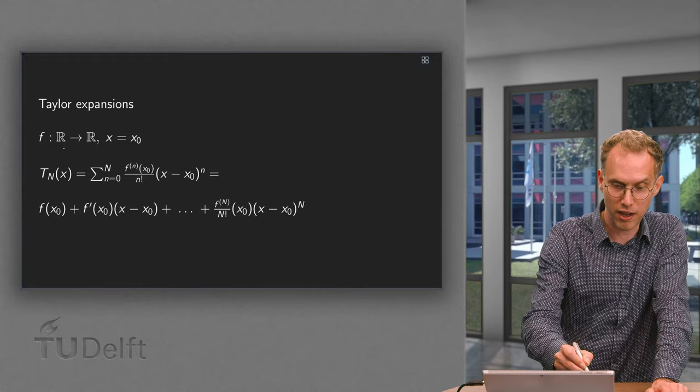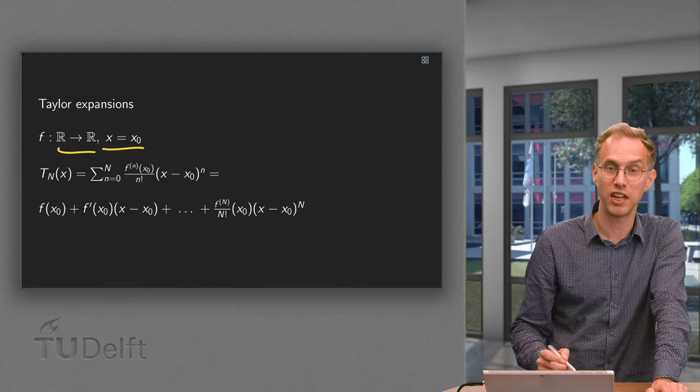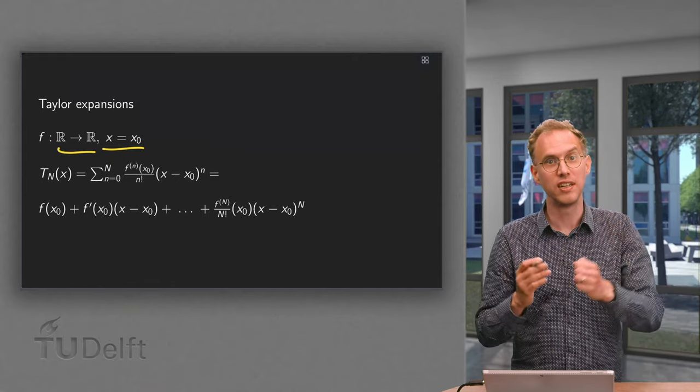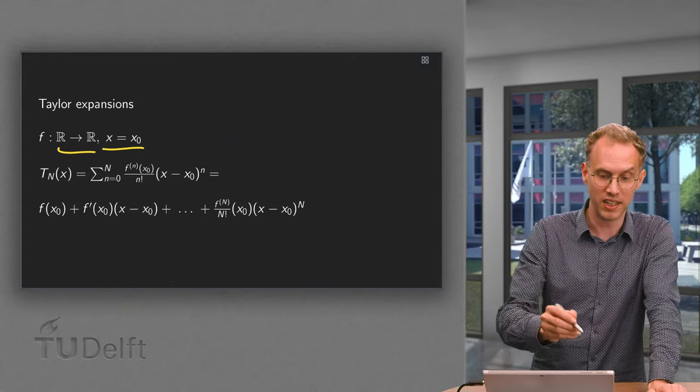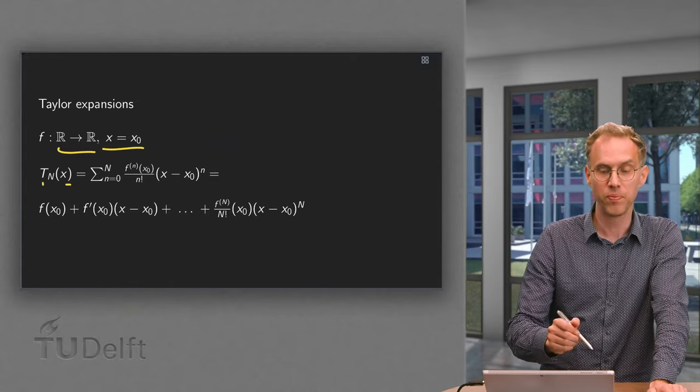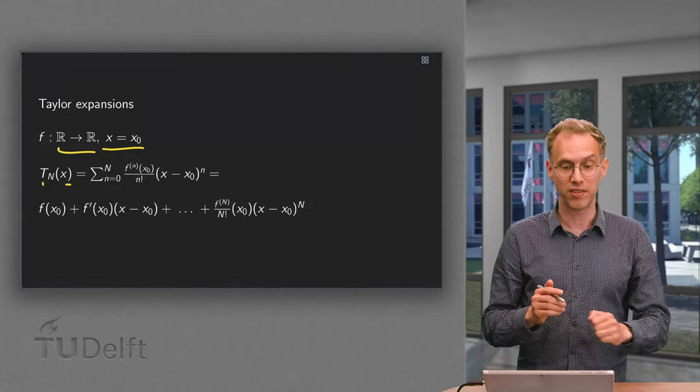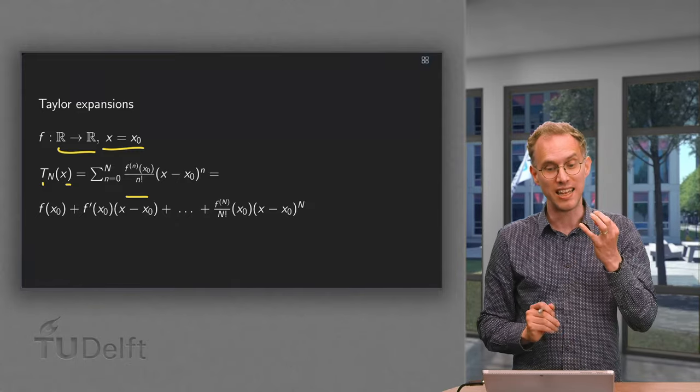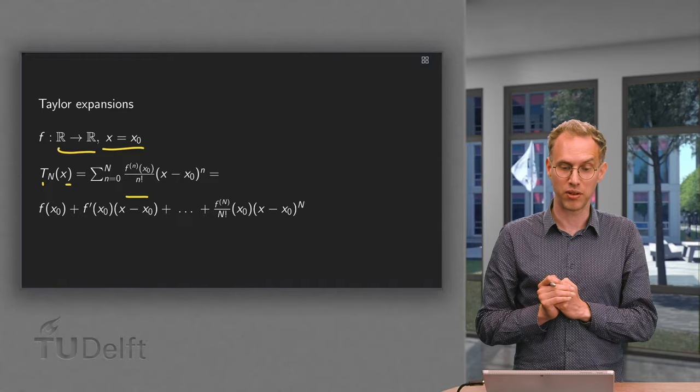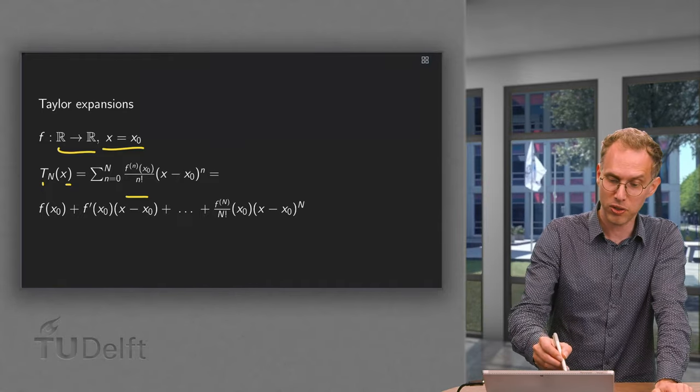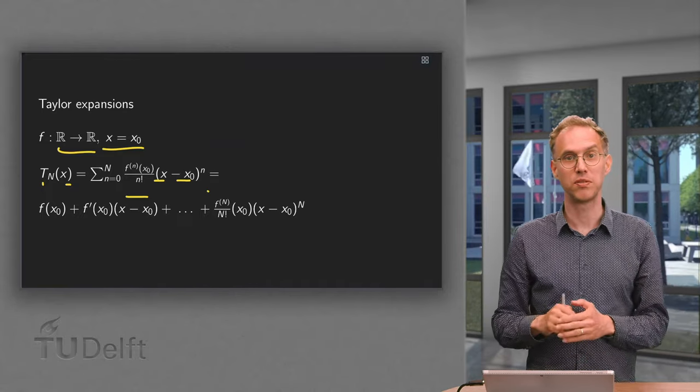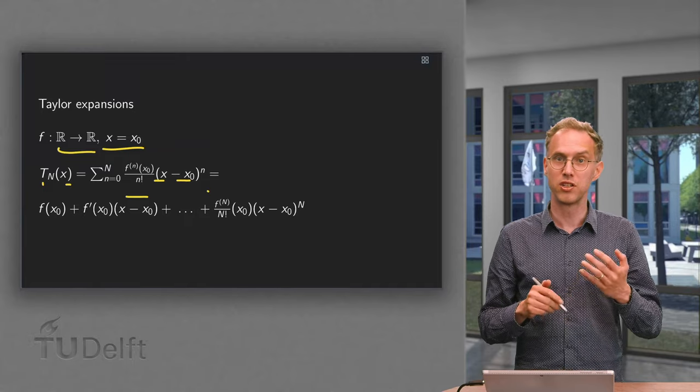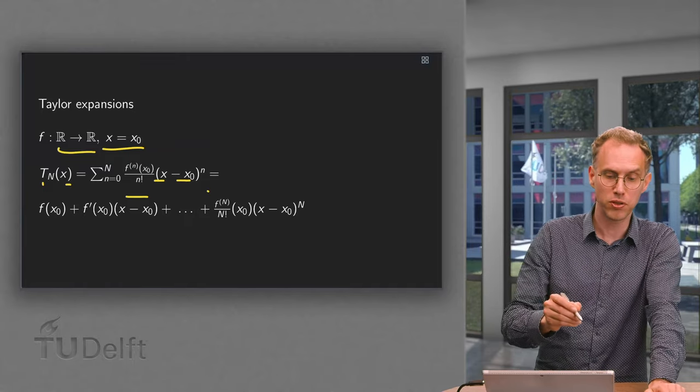So suppose f goes from R to R and you have some point x equals x₀. What then was the Taylor polynomial of degree n? Well, you compute all the derivatives at x₀, divide the nth derivative at x₀ by n factorial, and multiply with (x - x₀) to the power n. So if you write down the first few terms, what do you get?